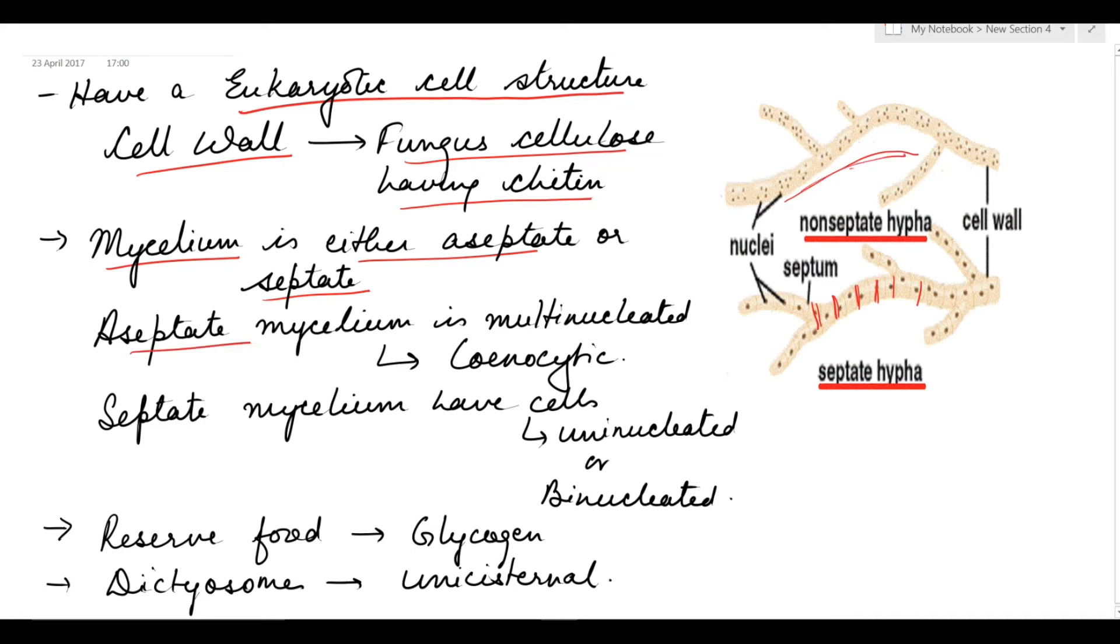The aseptate mycelium is multinucleated, meaning they possess many nuclei, and this condition is known as coenocytic. While the septate mycelium have cells which are either uninucleated or binucleated. Reserved food of fungi is glycogen, and the dictyosomes, that is the Golgi bodies, are represented by a single cisterna, meaning they are unicisternal.